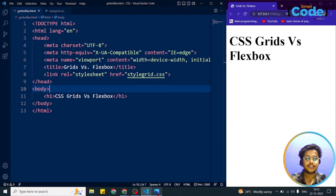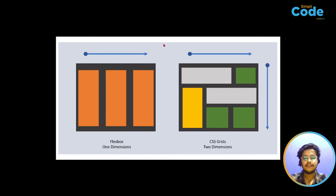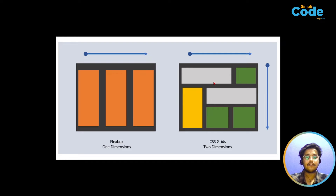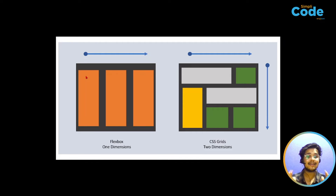What does two dimensions and one dimension mean? Here you can see an image with CSS Flexbox on the left and CSS Grid Layout on the right. In CSS Flexbox we have three flex items aligned next to each other — that is one dimension. In CSS Grids the items are aligned in rows and columns simultaneously, which is two dimensions.